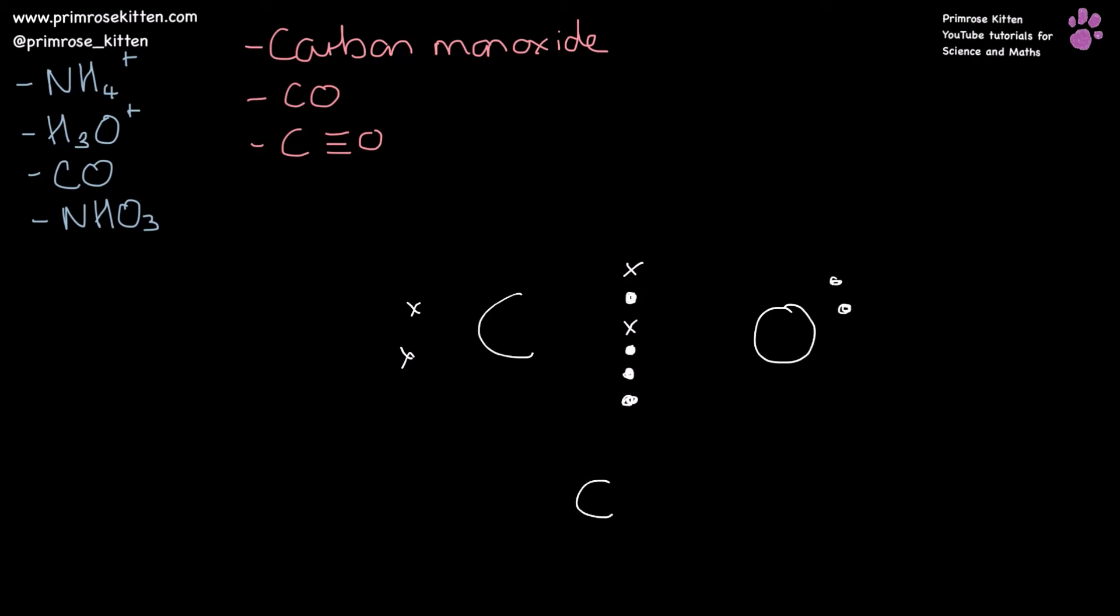So carbon monoxide is actually two traditional bonds and then one dative bond. And the arrow of the bonds shows the direction of electron giving so that the oxygen gave the electrons to the carbon. It wasn't a fair swap in this case.